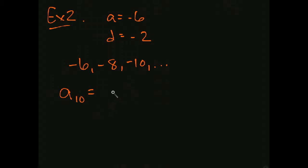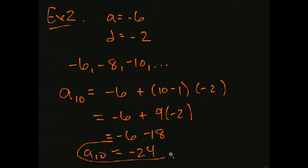a10 is supposed to be the first term, plus 10 minus 1 times the difference. So it's negative 6 plus 9 times negative 2. Negative 6 minus 18, so I get negative 24. And that's the 10th term. And you would have found that again if you had just done this out 10 times, we would have gotten to negative 24.